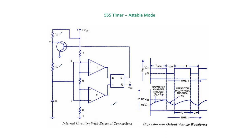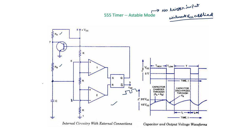Another important difference is in astable mode there is no trigger signal. The trigger input pin 2 will be connected to pin 6, and that will be connected to capacitor C. Using this astable mode we can also generate a square wave at the output. Initially, without applying Vcc, the voltage across the capacitor will be 0 — let us call this voltage Vc. Vc is 0, and Vc is the voltage at the sixth terminal as well as the second terminal.